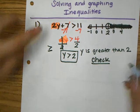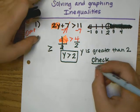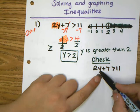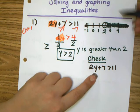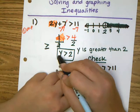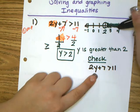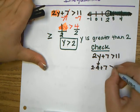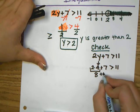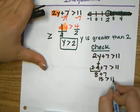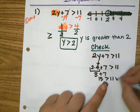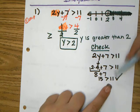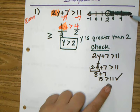To check, I take the original problem and instead of y I plug in a number that is in the shaded region, because all shaded numbers are values y can be. I pick 4: 2 times 4 is 8, 8 plus 7 is 15, and 15 is greater than 11. It worked, so I know I should have shaded the right side.